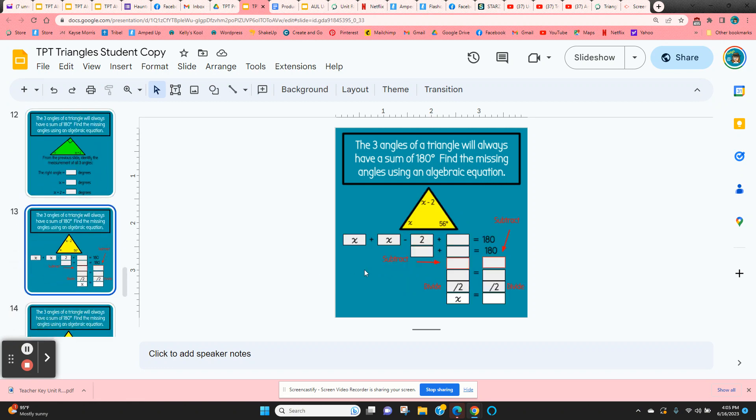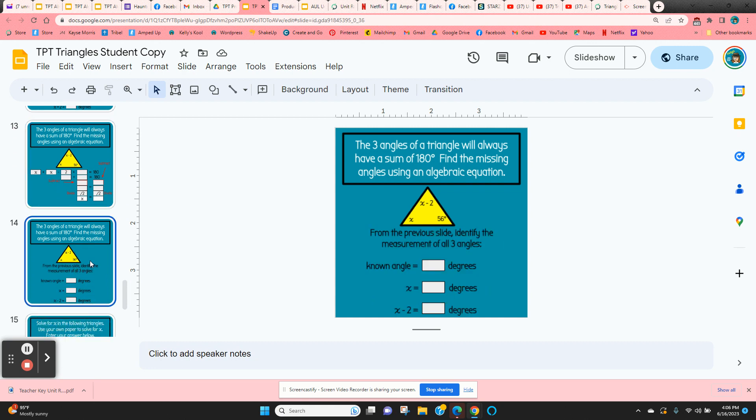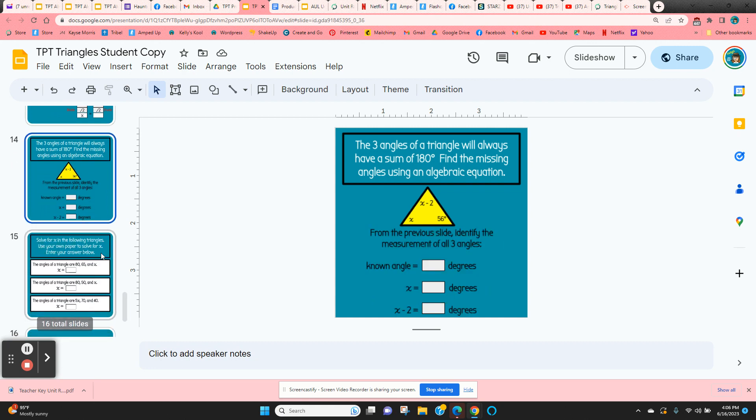The next one, they're going to do more of it themselves. So here they just have to fill in the 56 and combine like terms and then subtract and divide. And then again, they have to type in all three angles.